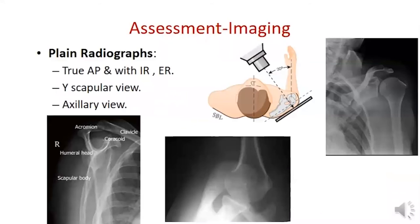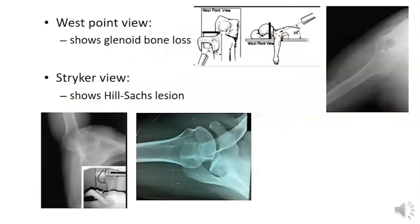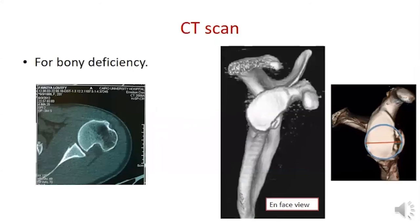Imaging assessment should include plain X-rays with true AP, AP with internal and external rotation for Hill-Sachs lesion, West Point view, and axillary views. Special views may be needed for bony deficiencies, like the West Point view for glenoid bone loss and Stryker notch view for Hill-Sachs lesion. CT scan is very important for bony deficiency — axial cuts for Hill-Sachs lesion and special glenoid en-face view with 3D reconstruction with digital subtraction of the humeral head for glenoid deficiency.